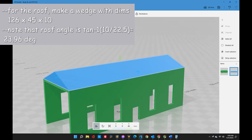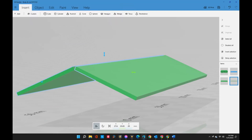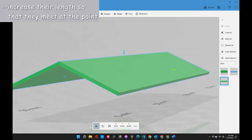After the body is done, we create a wedge for the roof with the dimensions shown. Calculate the angle as I showed here because that will be useful for further operations. Create two thin roof pieces and orient them as shown at the desired angle that we calculated before. Increase their length slightly so that they meet at the middle.